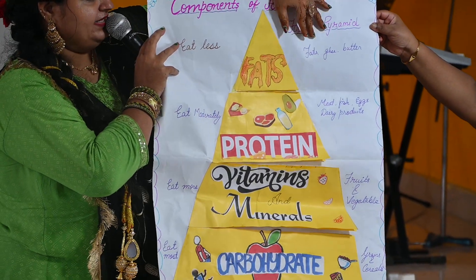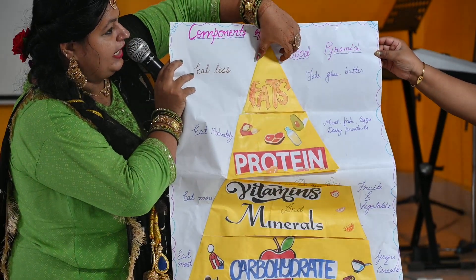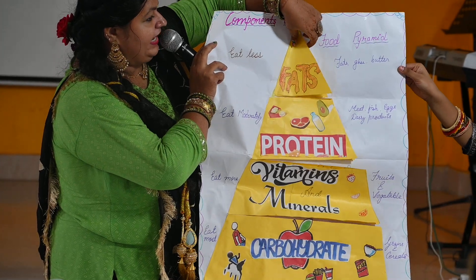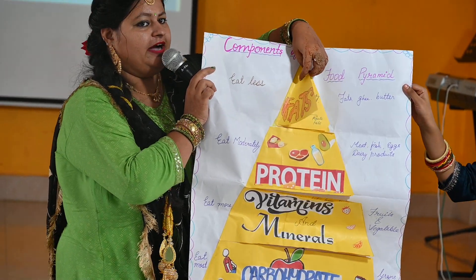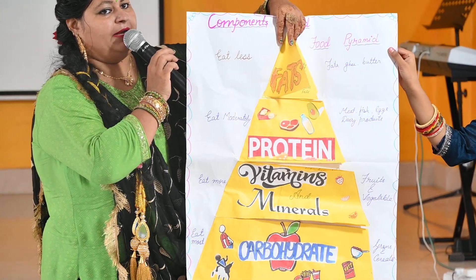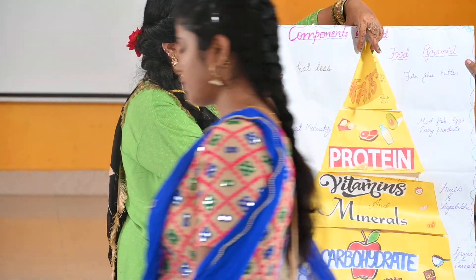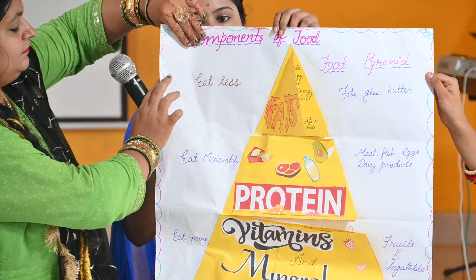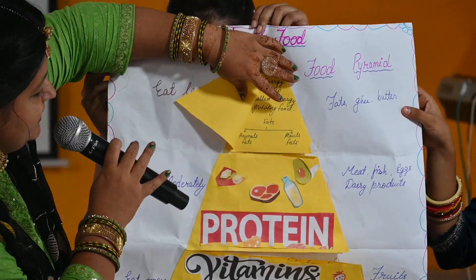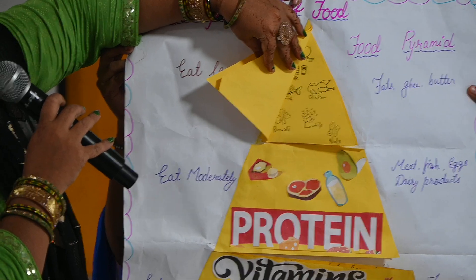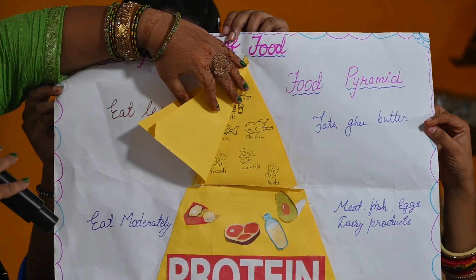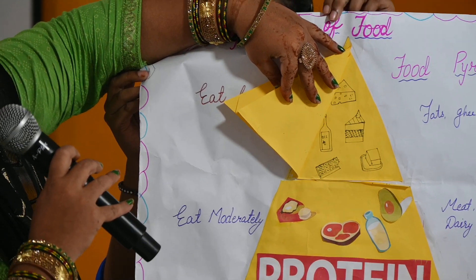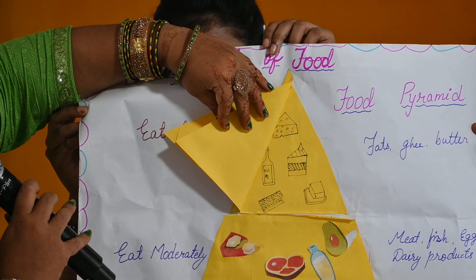As you can see here, the upper portion of the pyramid is fats. We must eat a very less amount of fat in our food. Here is the explanation of fats and we also have pictures regarding foods that are a rich source of fat, which we should use in very less amounts. The pictures include ghee, cheese, butter and all.